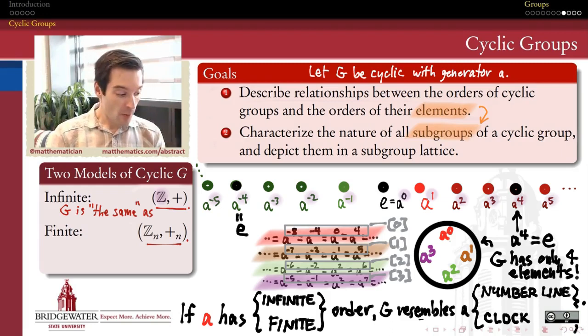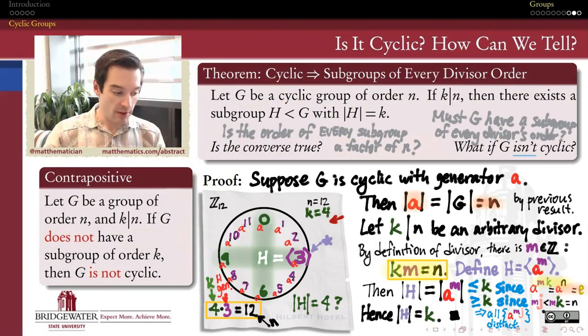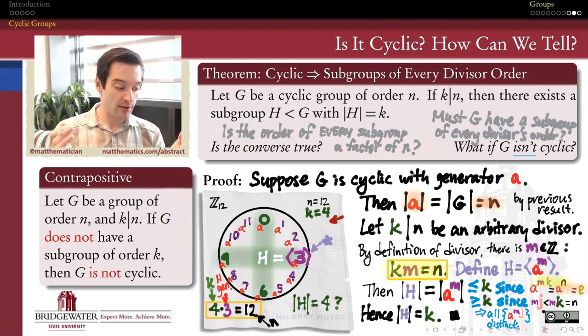We also know a lot at this point about what kinds of subgroups cyclic groups must have. For a finite cyclic group, every divisor of the order of the group will have at least one subgroup that has that as its order. If I start with a cyclic group of order 40, then I know it's going to have a subgroup of order 1, 2, 4, 5, 8, 10, 20, and 40. Every divisor of the order of the group has at least one subgroup of that order, and that's really powerful.